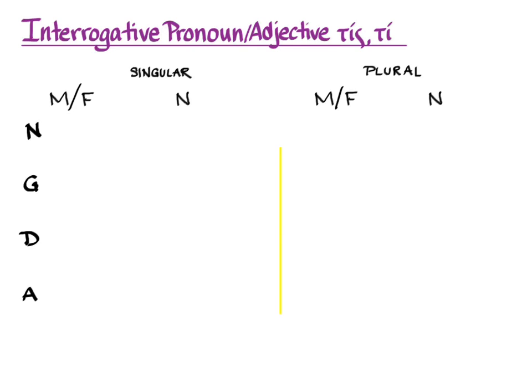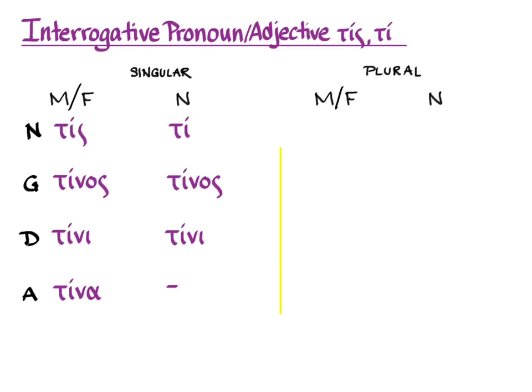Let's learn the forms first. These are largely third declension forms, and there is one set for the masculine and feminine and one set for the neuter. Here they are: tis-ti, tinos-tinos, tini-tini, tina-ti, and then in the plural — there are also alternative forms of the genitive singular, which look exactly like the article, so you'll need context to tell them apart.